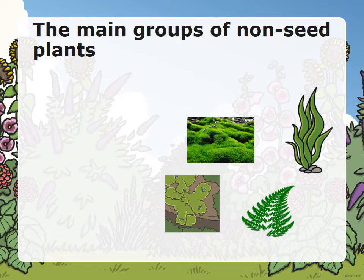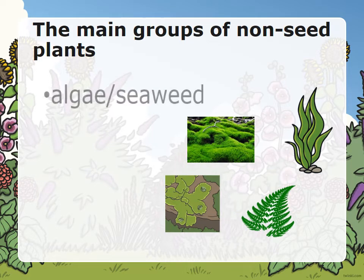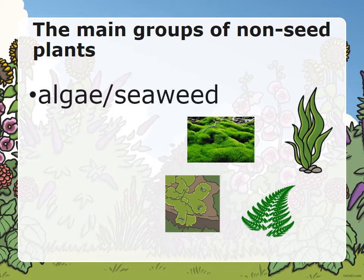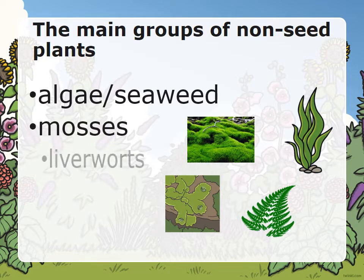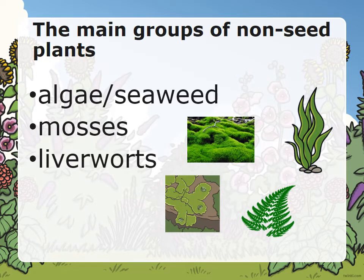Let's look at the main groups of non-seed plants. They are the algae or seaweed, the mosses, the liverworts, and the ferns.